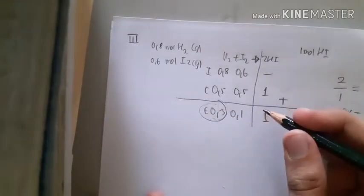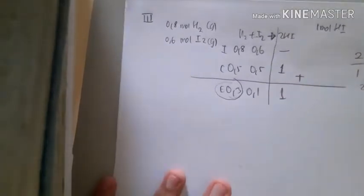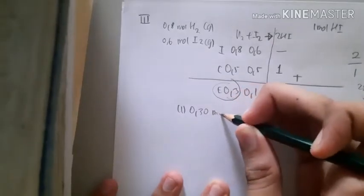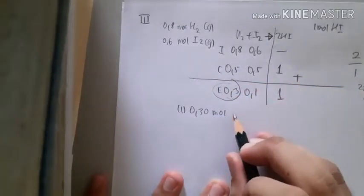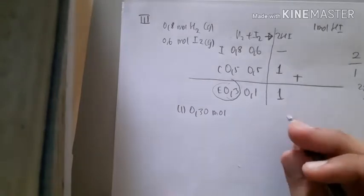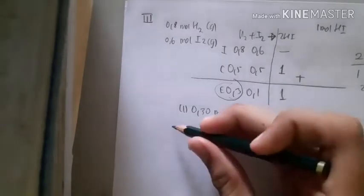Remember what the question requests: they ask for the second decimal place, so you must answer 0.30 mole. Otherwise, your points would be deducted.